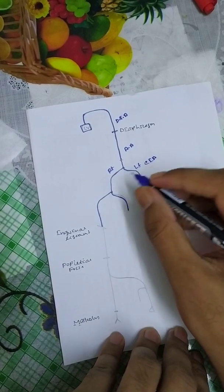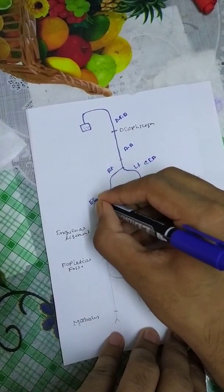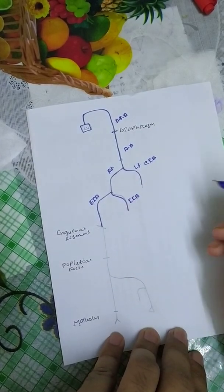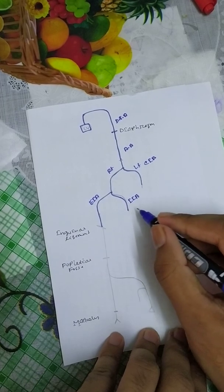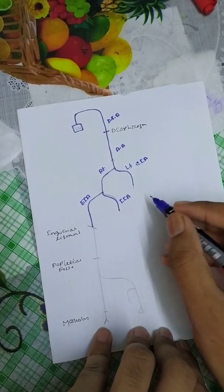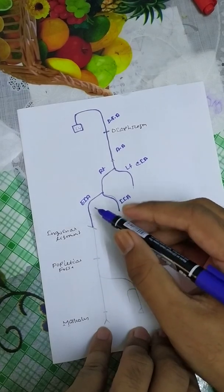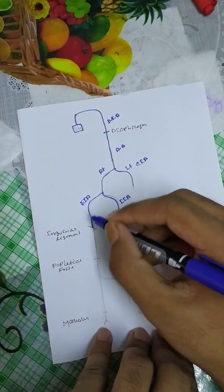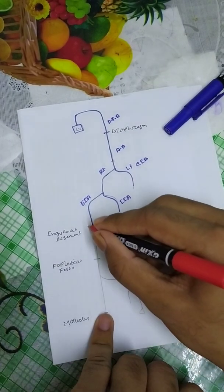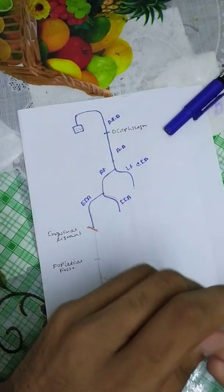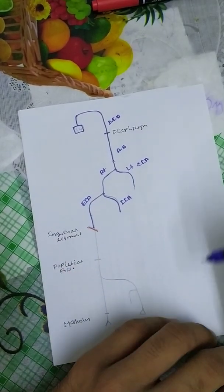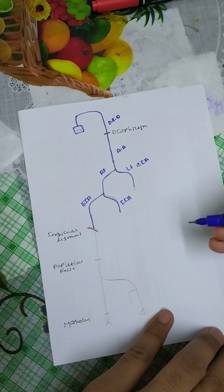From the common iliac artery we have the internal iliac artery and external iliac artery. When we cross the inguinal ligament, we call it the femoral artery.